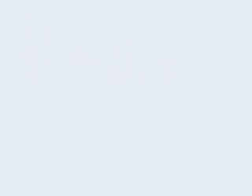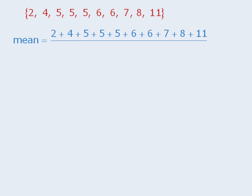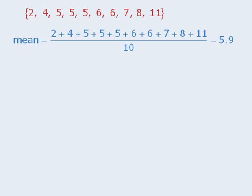Now let's see how these three measurements compare when describing the same set of numbers. To calculate the mean, we'll find the sum of the 10 numbers, then divide by 10 to get an average of 5.9.